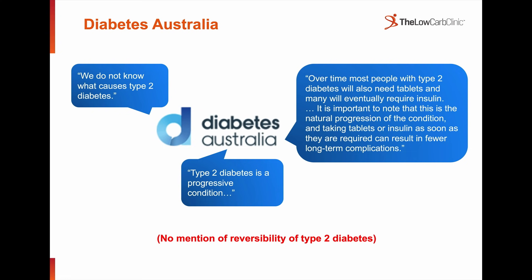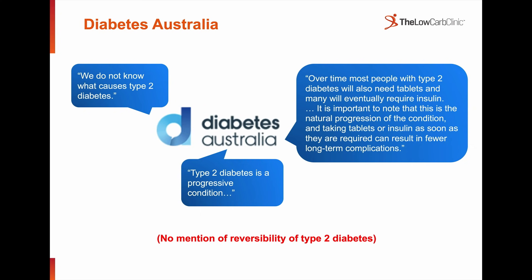What do our peak bodies say? Diabetes Australia states: 'We do not know what causes type 2 diabetes' — which I find extraordinary, given pretty good data that sugar and high carbohydrate intake are the well-known causes. They also say type 2 diabetes is a progressive condition, that over time most people will need tablets and many will eventually require insulin, noting this is the natural progression. Interestingly, there is no mention of reversibility of type 2 diabetes anywhere on their website.